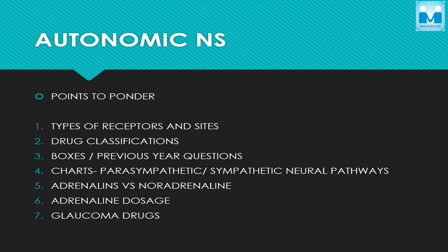Now coming to the autonomic nervous system — here, you mainly have to know the receptors: the types of receptors, alpha-1, alpha-2, beta-1, beta-2, their locations. Just knowing that, you can answer most questions. Receptors, sites, and drug classification — lots of tables will be there, so be thorough with that. Also go through the boxes in the guidebook and review previous papers to understand what questions come from this section.